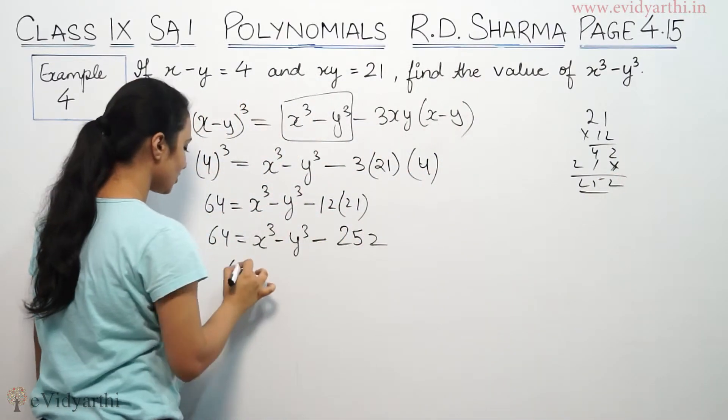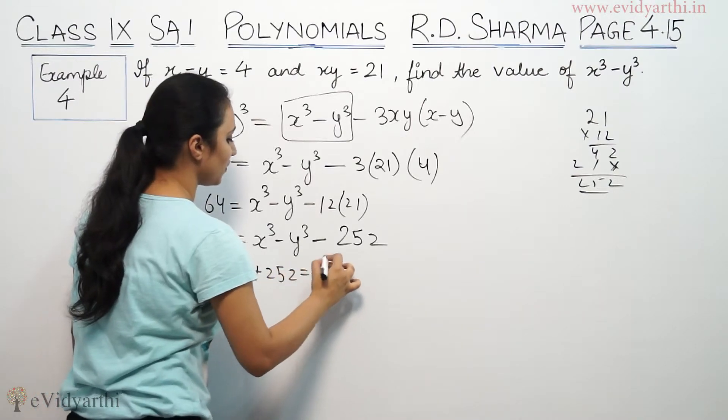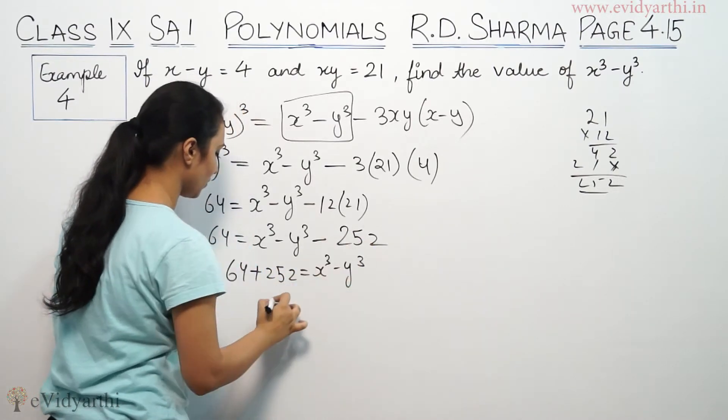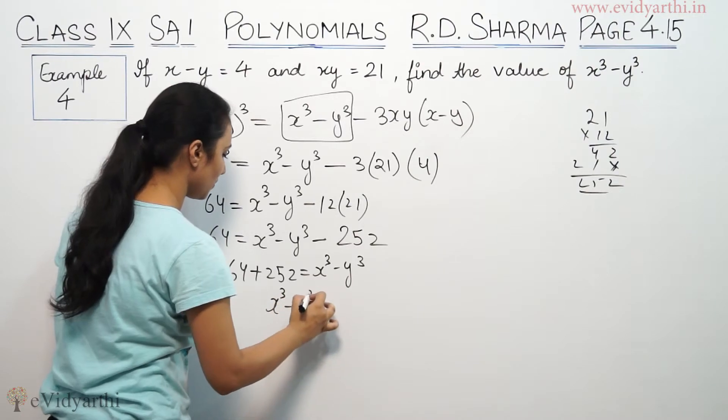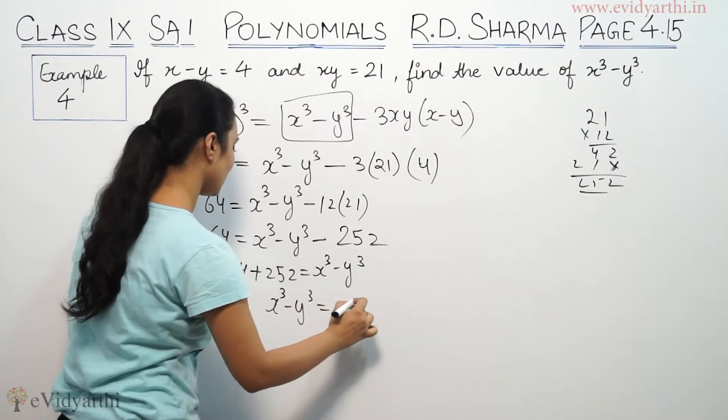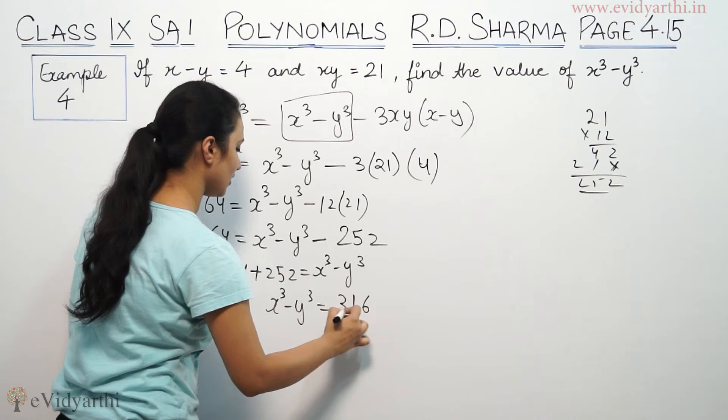This is 64 plus 252 is equal to x cube minus y cube. So x cube minus y cube, this is 316.